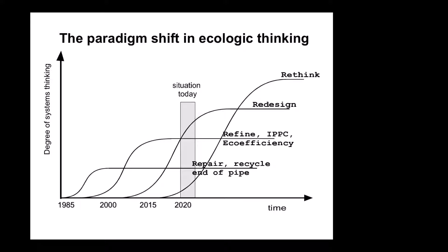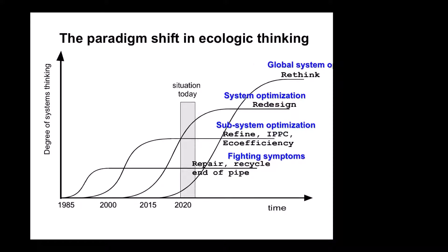Here we can see a paradigm shift in ecological thinking that is rapidly coming up. In the early days it was fighting symptoms. Then it was subsystems optimization — addressing distinct emissions of different kinds. Then we got system optimization, and we are now right in that phase. For the future, even more important is global system optimization. The most predominant thinking here is around the climate — we cannot get around that whatever we do. We are really all on the same spaceship Earth.